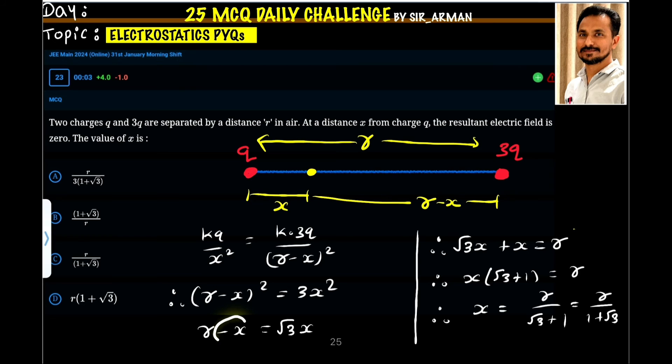Taking this X to the other side, root 3X plus X equals R. Taking X common, X times root 3 plus 1 equals R. We want X, so X equals R by root 3 plus 1, or R by 1 plus root 3, which is the same. So option number C.